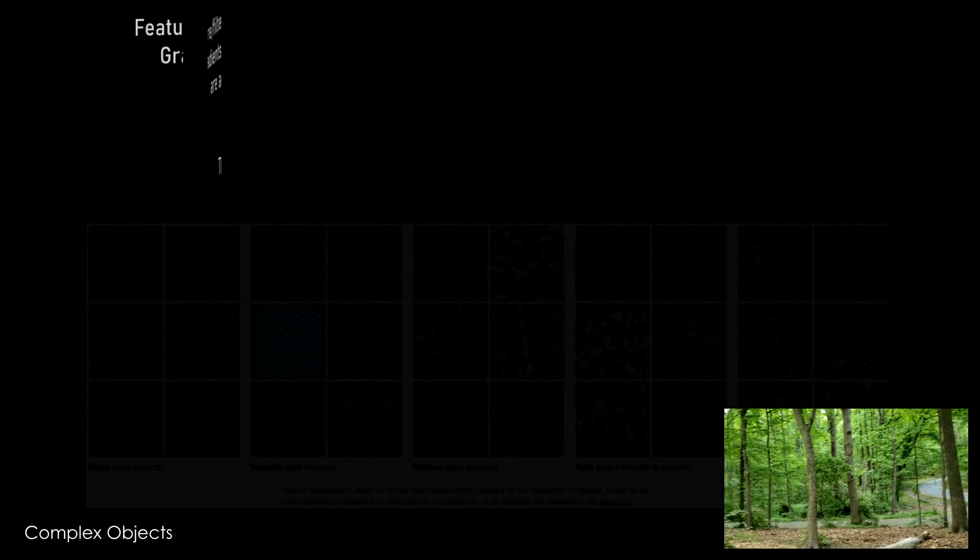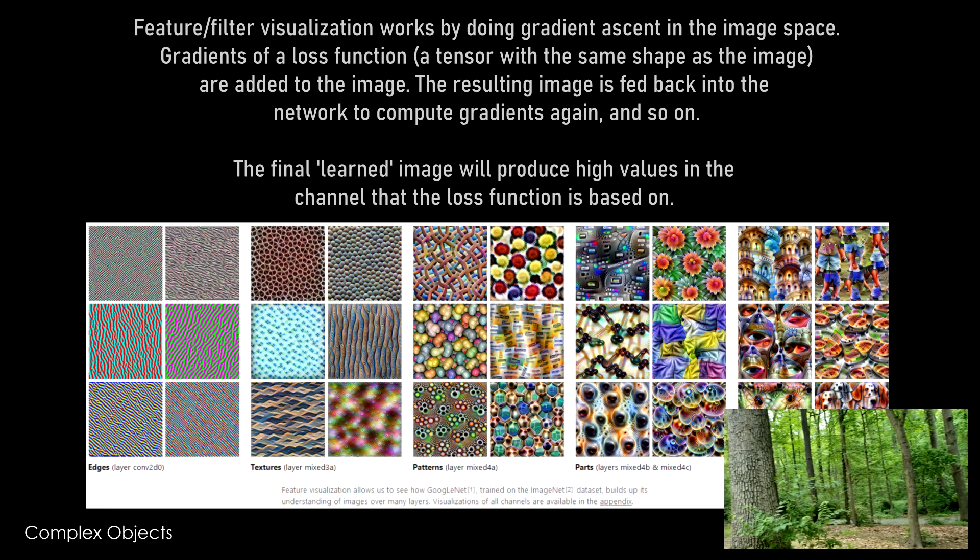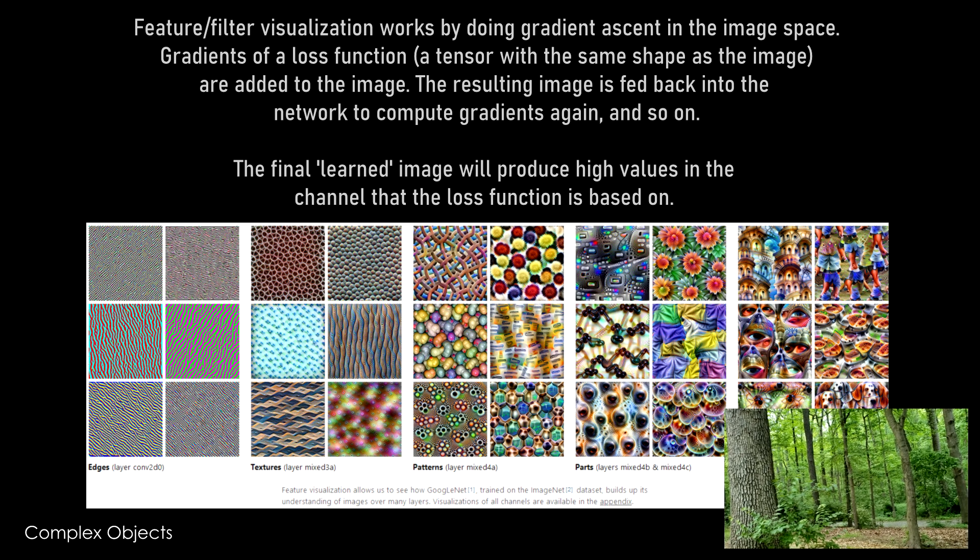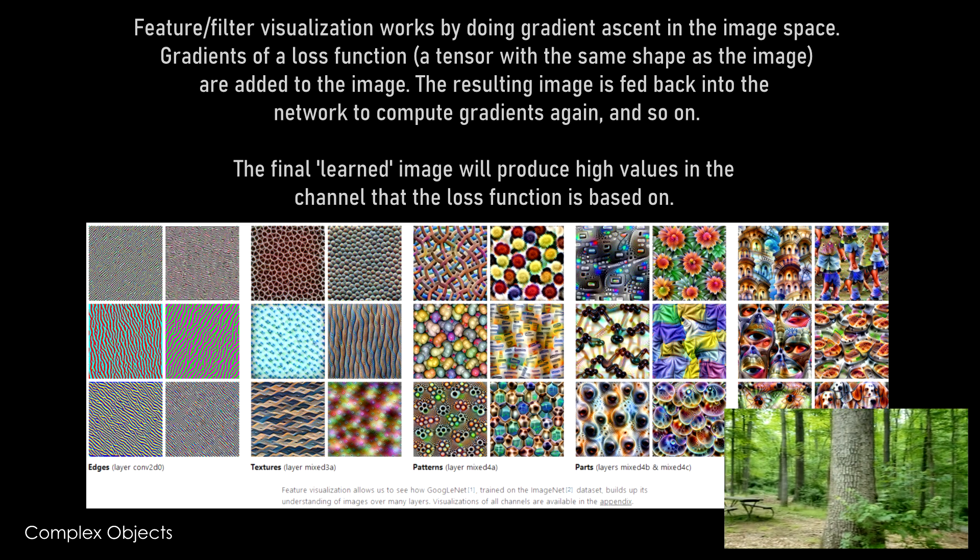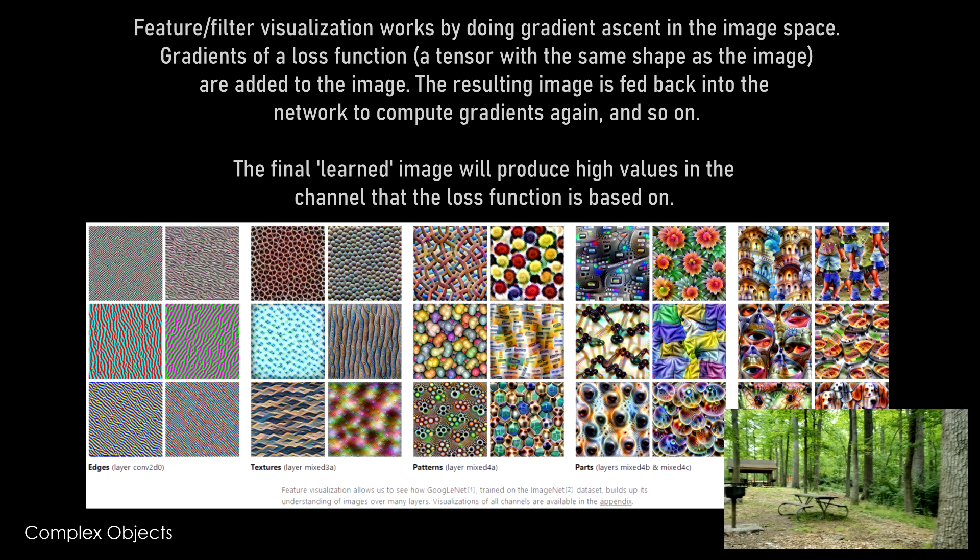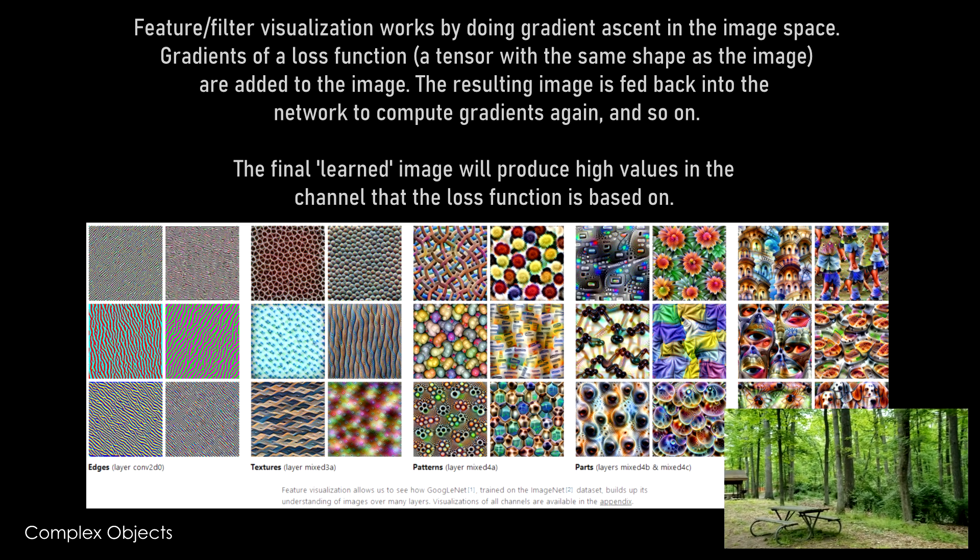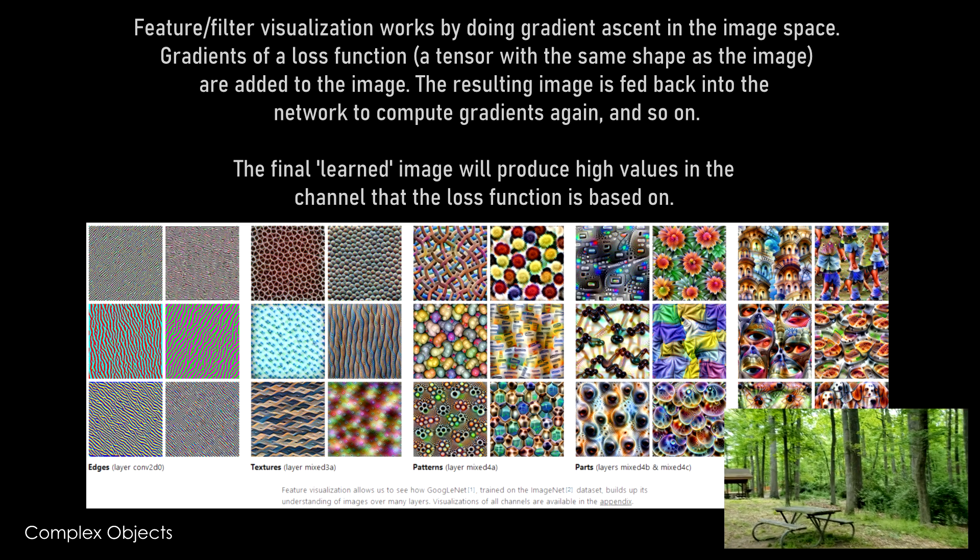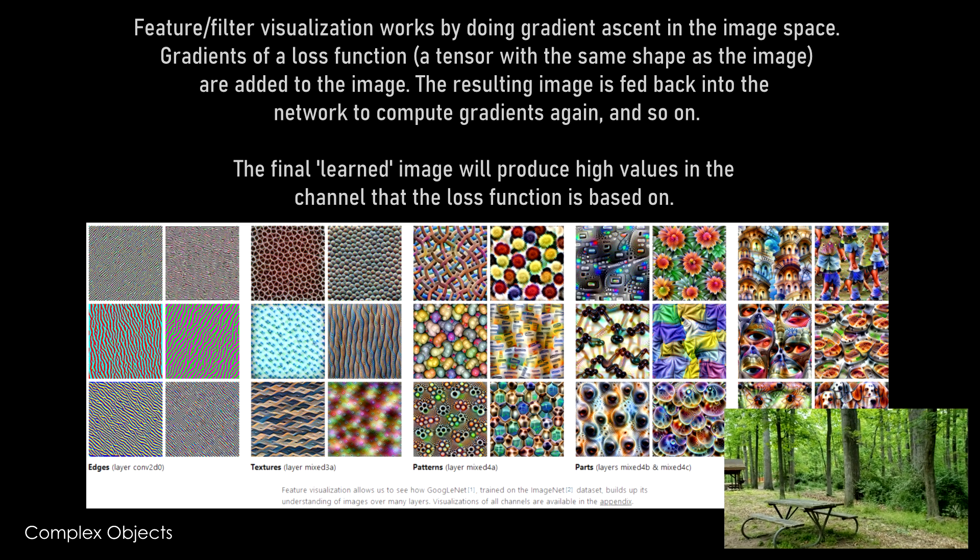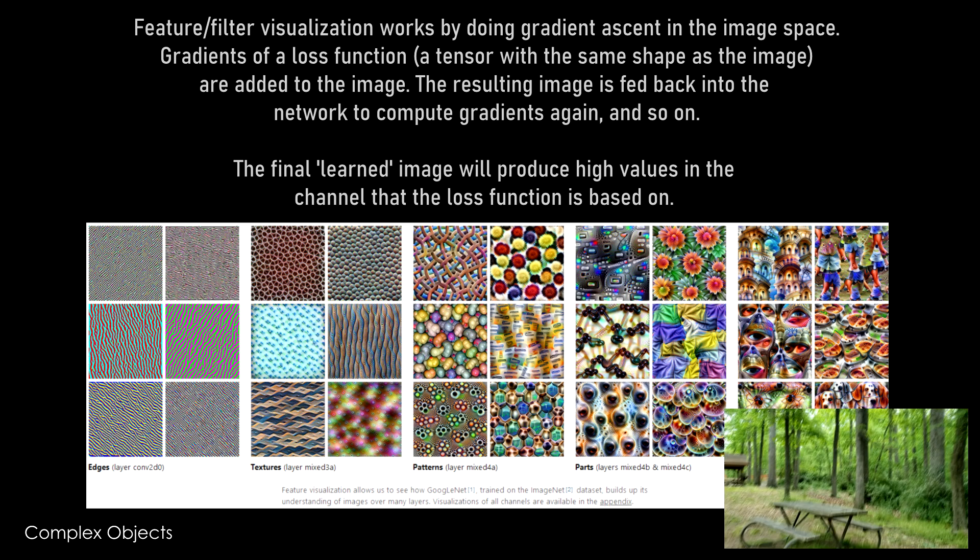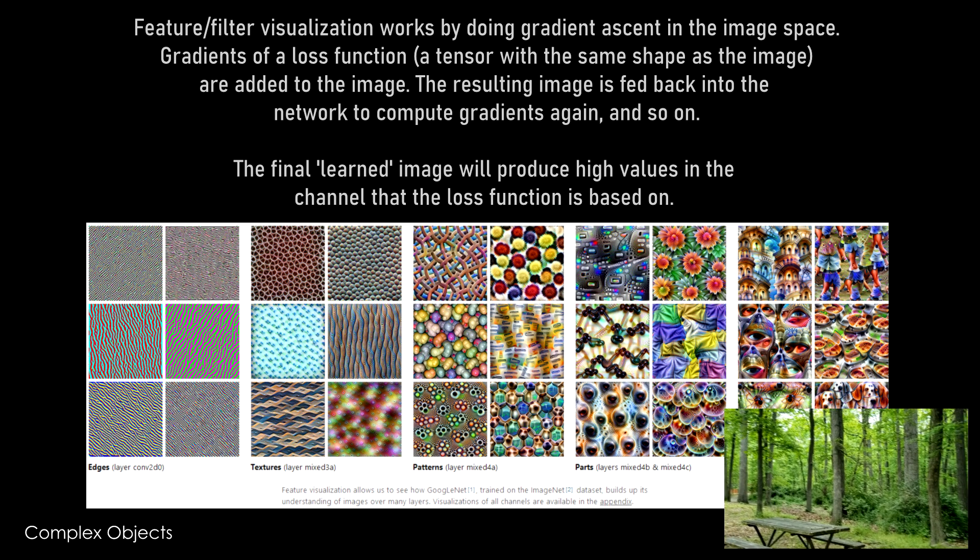In this case you can string out the gradient with respect to, the derivative of this function with respect to the input, the image, the image is a tensor, you know height by width by 3 for RGB images. So the gradient is actually also a tensor you can think of as like of the same size, you're adding this block to the image.